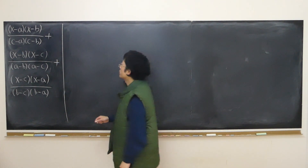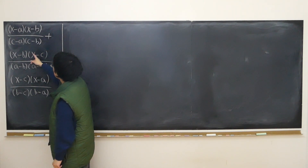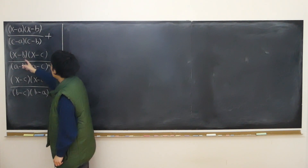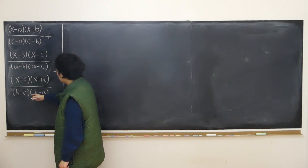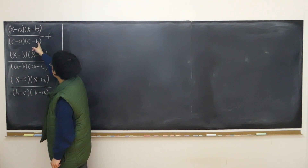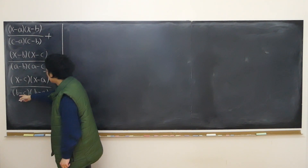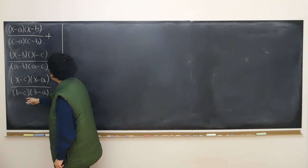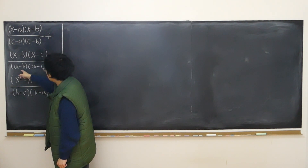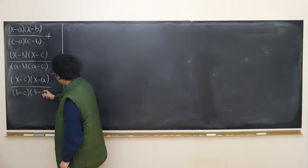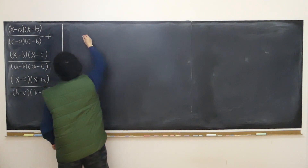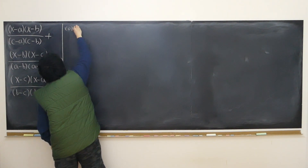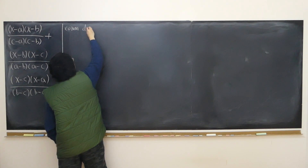First of all, what's the common denominator? I can see there is (c minus a) down here and (a minus c) here — they only differ by a negative sign. There's (c minus b) down here and (b minus c) down there — they only differ by a negative sign. There's (a minus b) and (b minus a) — also differ by a negative sign. So the common denominator is...